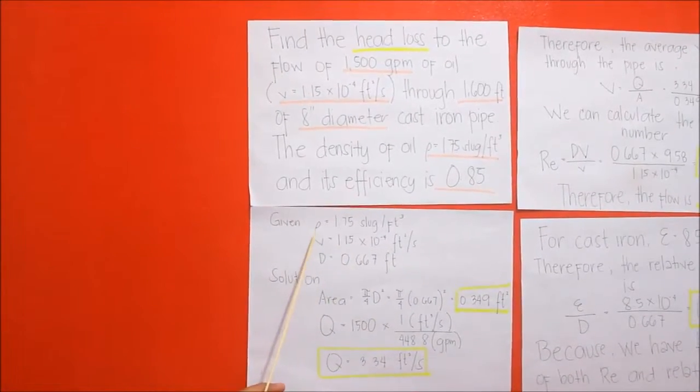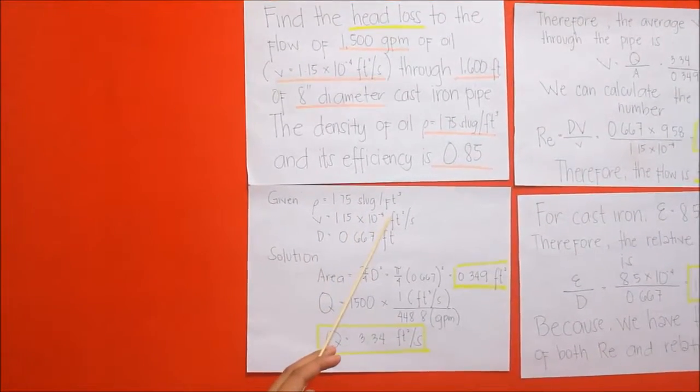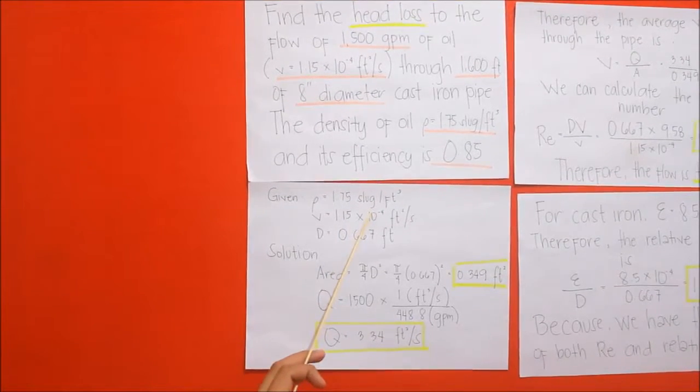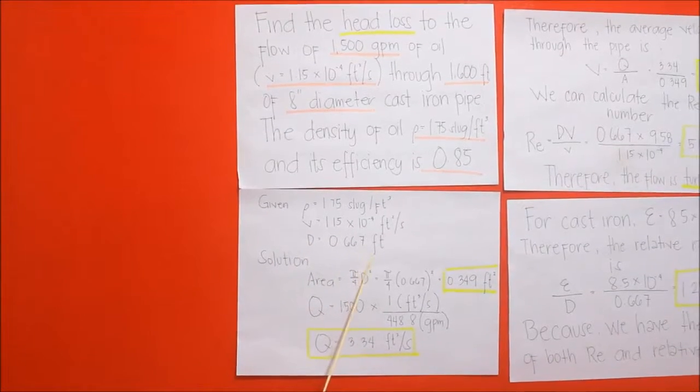We have a given of density equal to 1.75 slug per cubic feet, a viscosity of 1.15 times 10 to the power of negative 4 square feet per second, and a diameter of 0.667 feet.